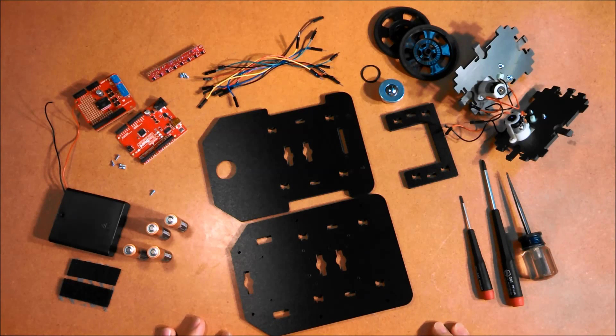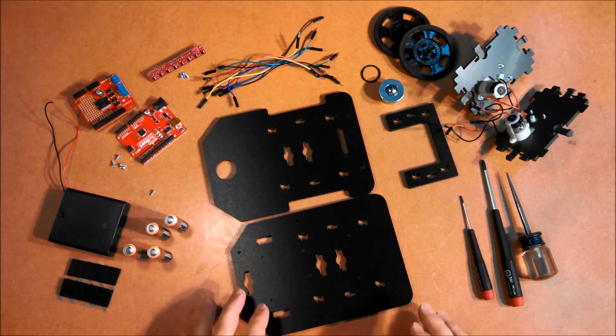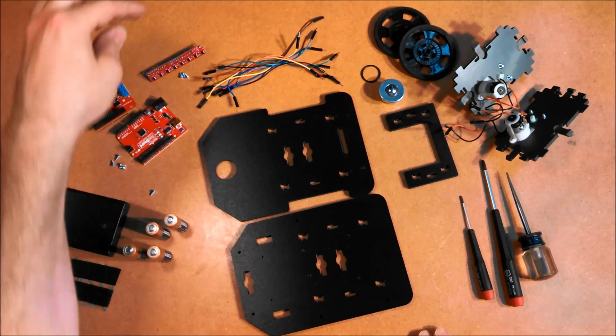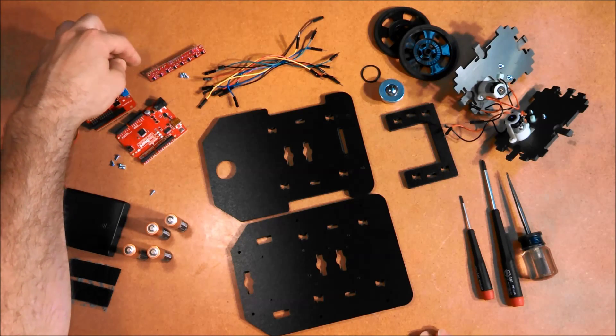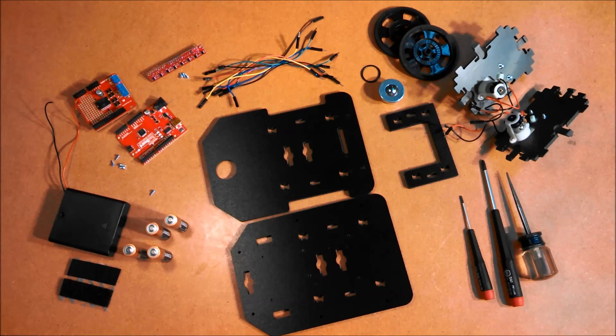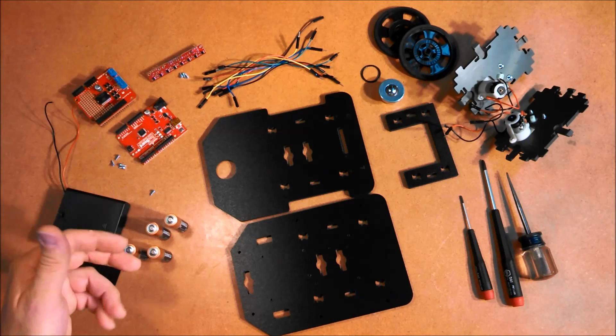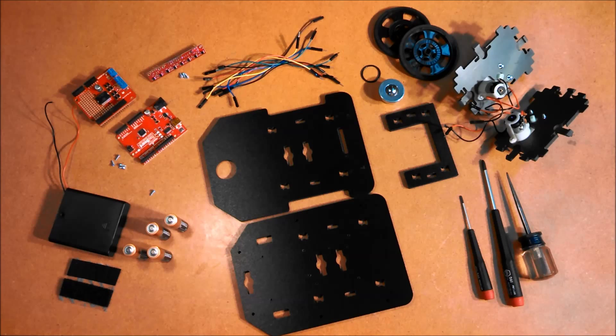What you have here is everything that we're going to need on this project. Everything comes with the Zagros kit, plus the Pololu QTR-8RC 8 sensor infrared line sensor, batteries which are not with the kit, and some hand tools here.